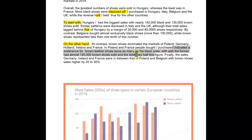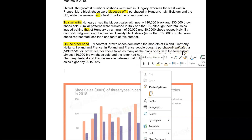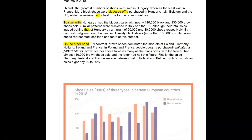So, if I've got 'purchased,' I can't have 'indicated' with your structure, but it's possibly workable. Purchase twice as many as the black ones, with the former — you can't use 'had sold,' that doesn't work with 'the former.' You could have here 'registering' — the former registering almost 140,000 proves sold. So, registering. That is good.